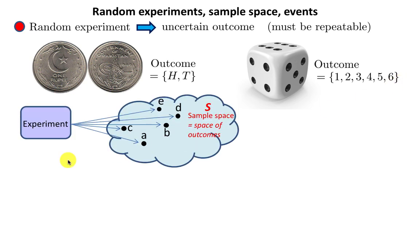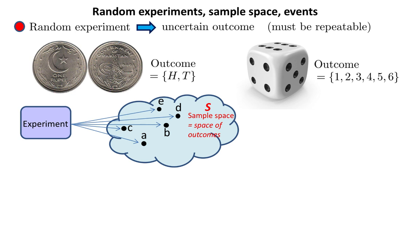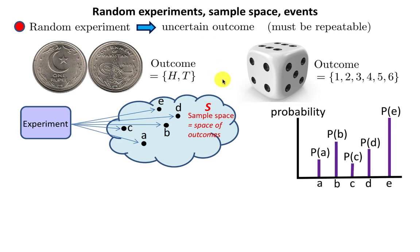Now let's generalize. In any experiment, you can have different outcomes — let's call them A, B, C, D, E. The set of all these outcomes is said to form what is called a sample space. The sample space is the space of all possible outcomes. In the case of the coin, that sample space would contain two elements. In the case of the die, it would contain six elements. With each outcome in the sample space, there is associated what we call a probability. P of A is the probability associated with A, P of B with the outcome B, and so forth. In the language of mathematics, we say that there is a mapping from the sample space onto a number which is a probability.